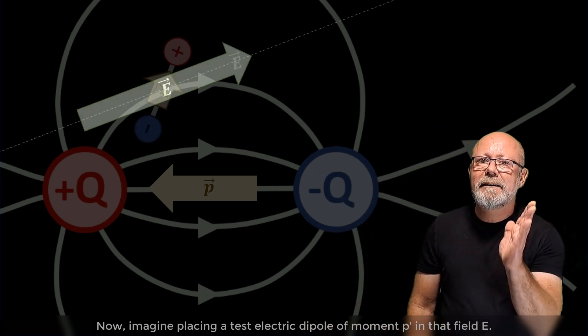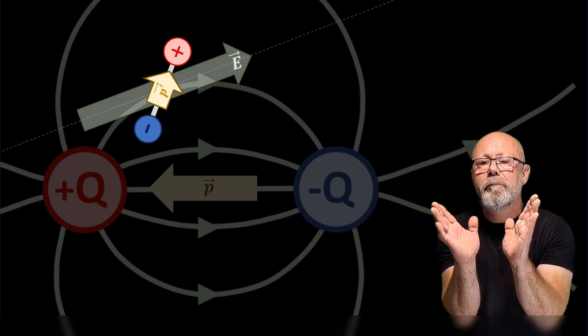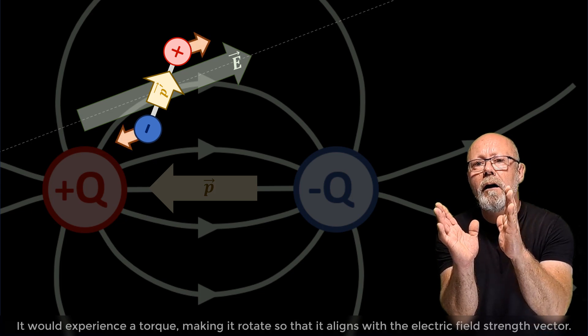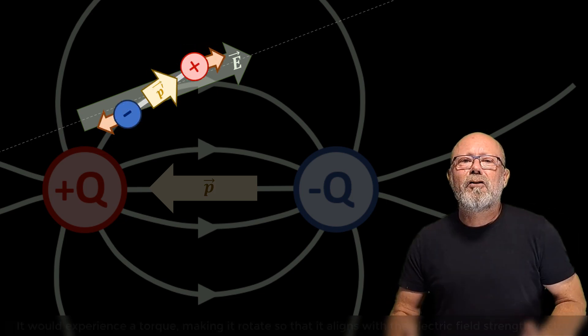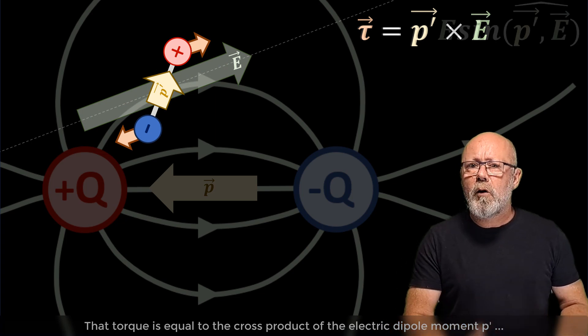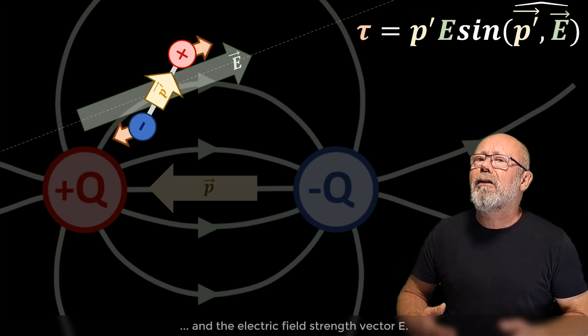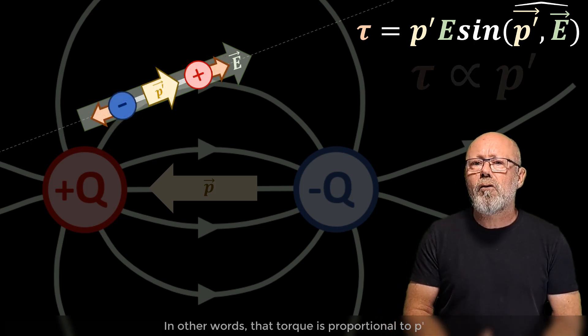Now, imagine placing a test electric dipole moment p prime in that field E. It would experience a torque making it rotate so that it aligns with the electric field strength vector. That torque is equal to the cross product of the electric dipole moment p prime and the electric field strength vector E. In other words, that torque is proportional to p prime.